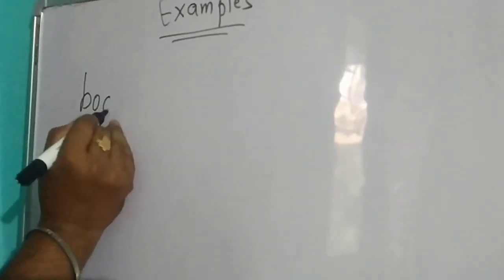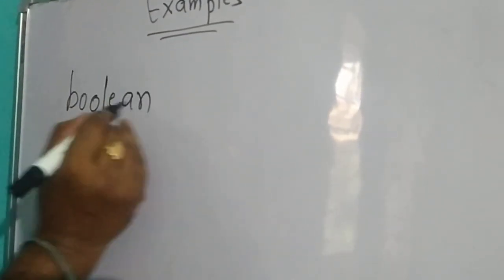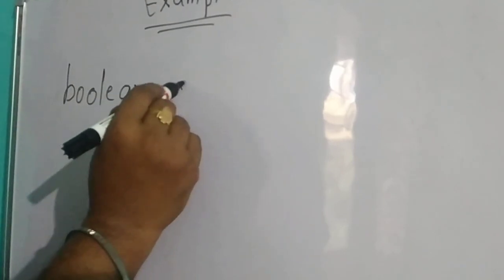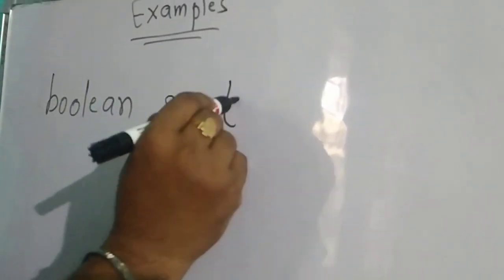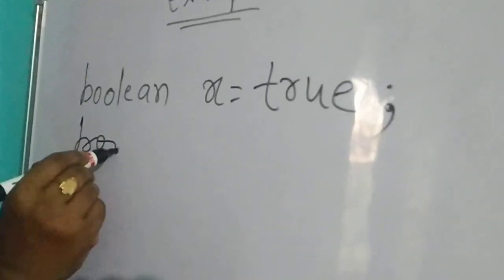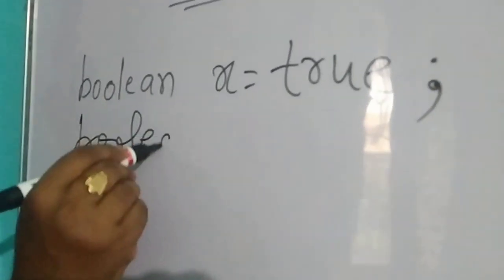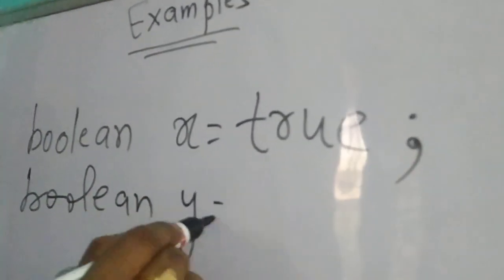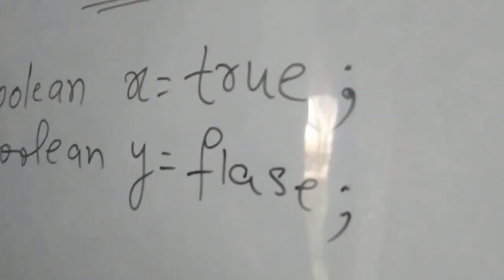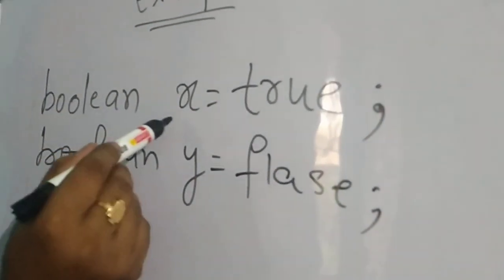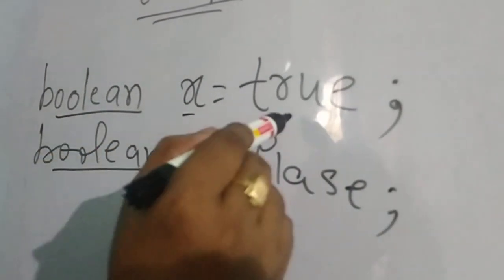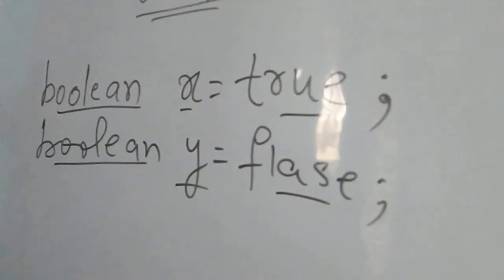Now we will go through boolean. Boolean stores only true or false. For example: boolean x = true; boolean y = false. Here x and y are the variable names, boolean is the data type, and true and false are the values.